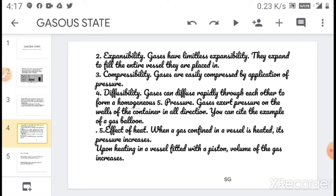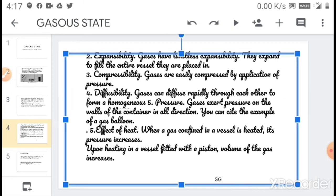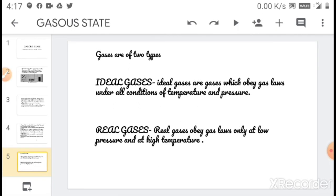Fifth is the effect of heat. When the gas is confined in a vessel and heated, its pressure increases. Upon heating in a vessel fitted with a piston, the volume of the gas also increases. Now, gases are of two types: ideal gases and real gases.